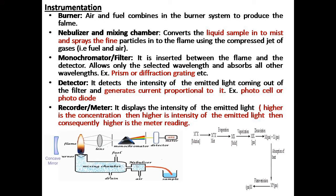When excitation takes place in the flame and the atoms return to the ground state, characteristic radiation is emitted. A concave mirror is kept on the opposite side of the recording device to reflect emitted radiation that would otherwise scatter away. This concave mirror reflects the emitted radiation from M* back toward the lens, and it then reaches the monochromator.